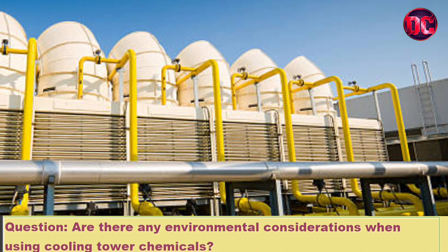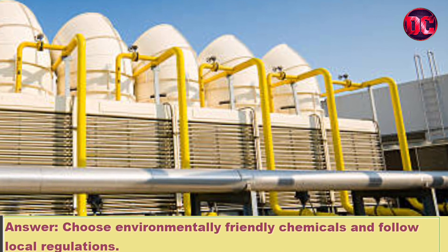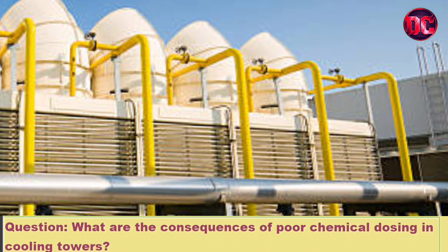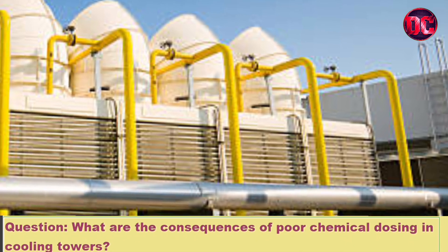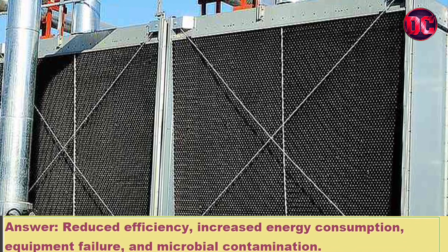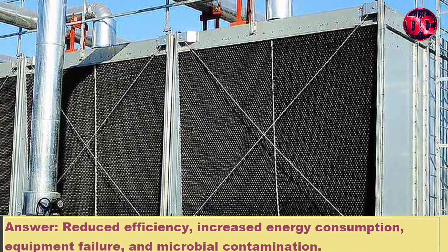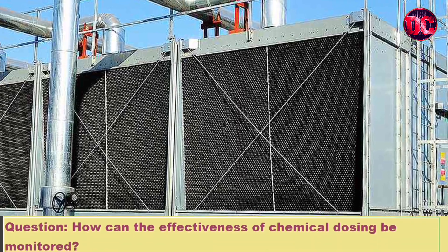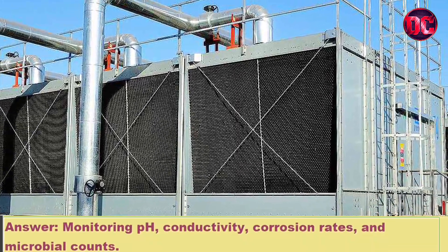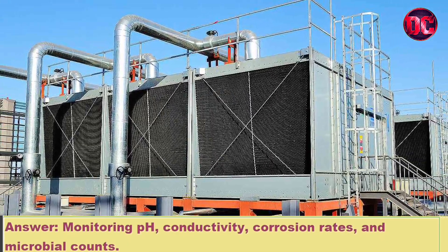Question: What are the consequences of poor chemical dosing in cooling towers? Answer: Reduced efficiency, increased energy consumption, equipment failure, and microbial contamination. Question: How can the effectiveness of chemical dosing be monitored? Answer: Monitoring pH, conductivity, corrosion rates, and microbial counts.